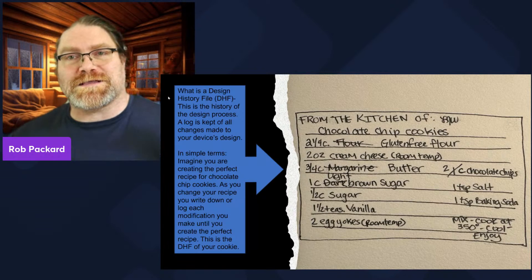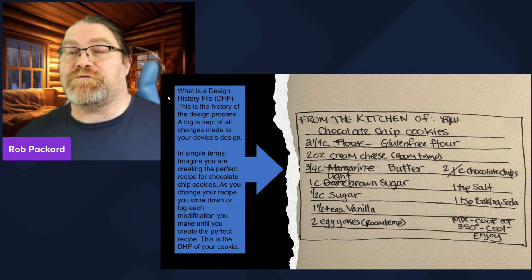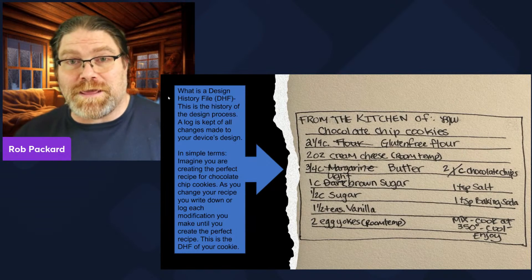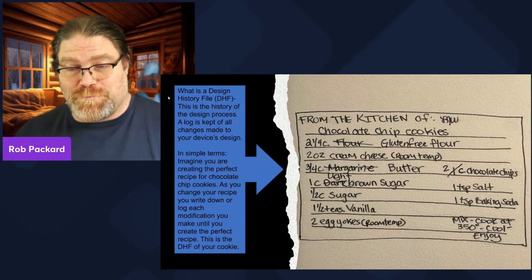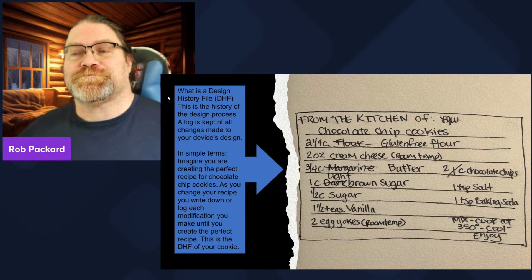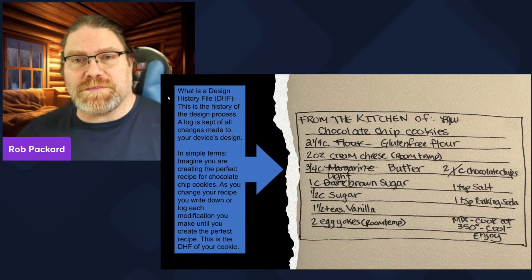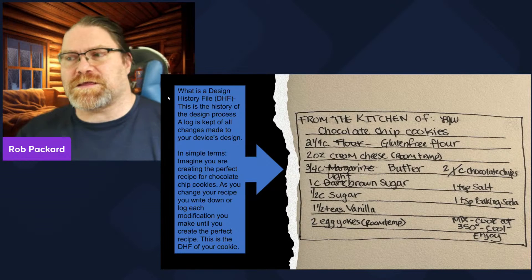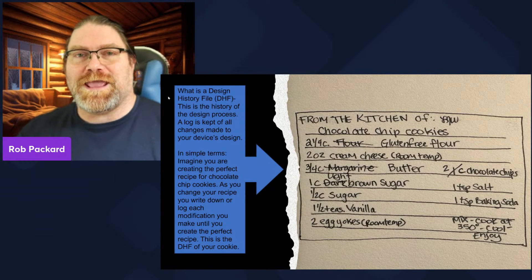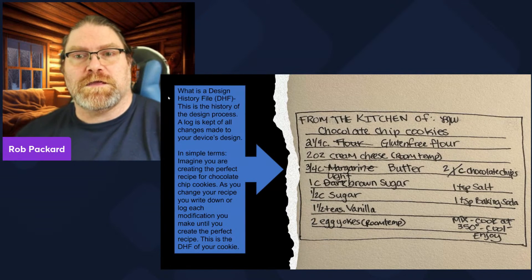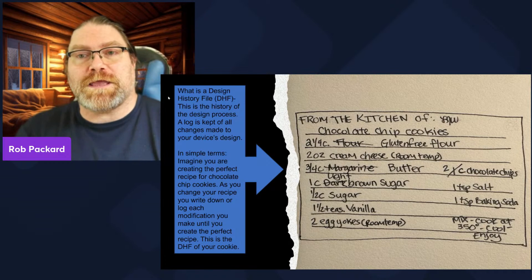The design history file is a collection of all the records you had for all the cookies you baked over time — all the different batches, all the different recipes, even the ones that you don't tell anybody about. Those go in there too. We have those in the medical device industry — ones that were miserable failures — but you're supposed to document those. The bad ideas, the good ideas, everything goes in there. You might have a plan like substituting one ingredient for another, and it fails. You have an idea, a hypothesis, you do the test, you record the results, and you go back and change your plan.